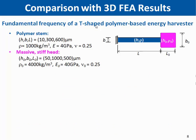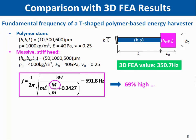To validate our model, we compare with FEA simulation. We estimated the fundamental frequency of a T-shaped polymer-based energy harvester made of a polymer beam and a stiff, dense head of another material. The benchmark value from FEA simulation was 350.7 Hz. Comparing this to using the actual end point mass gives a very poor approximation of 591.8 Hz, which is 69% too high, mainly due to the large size of the head and significant eccentricity.